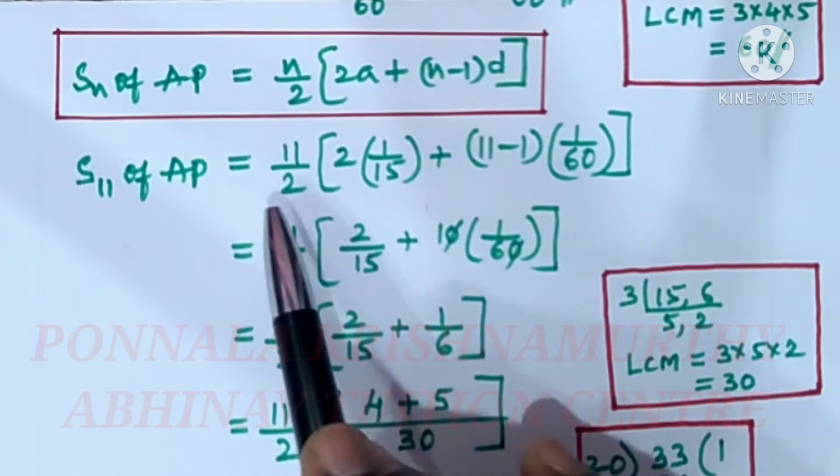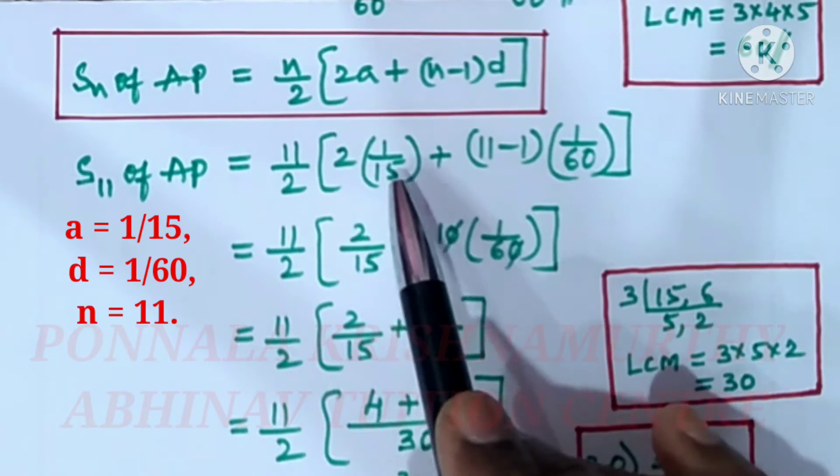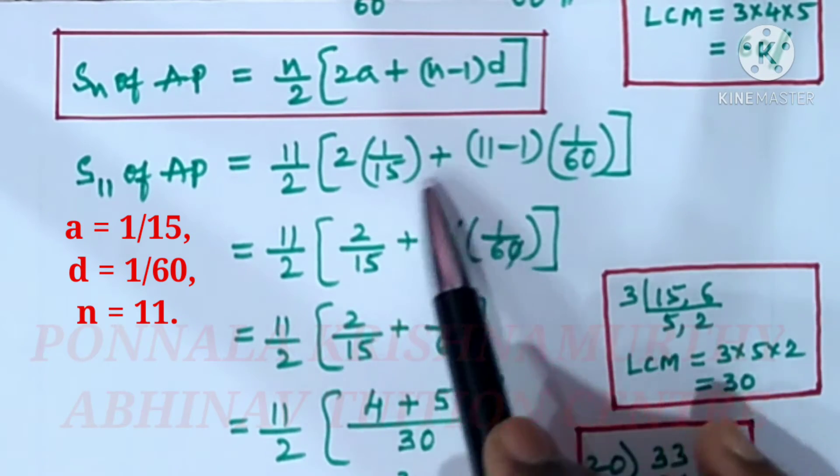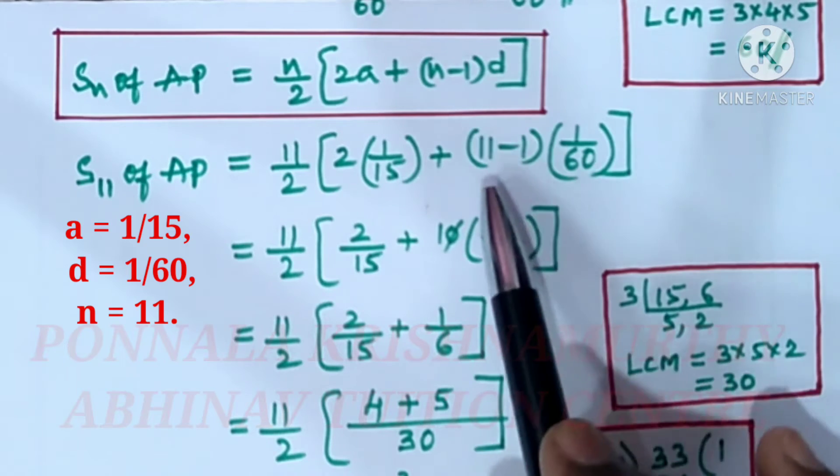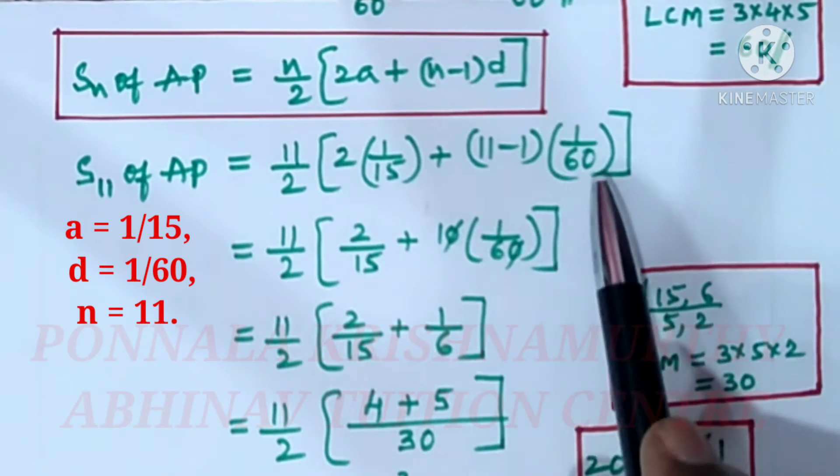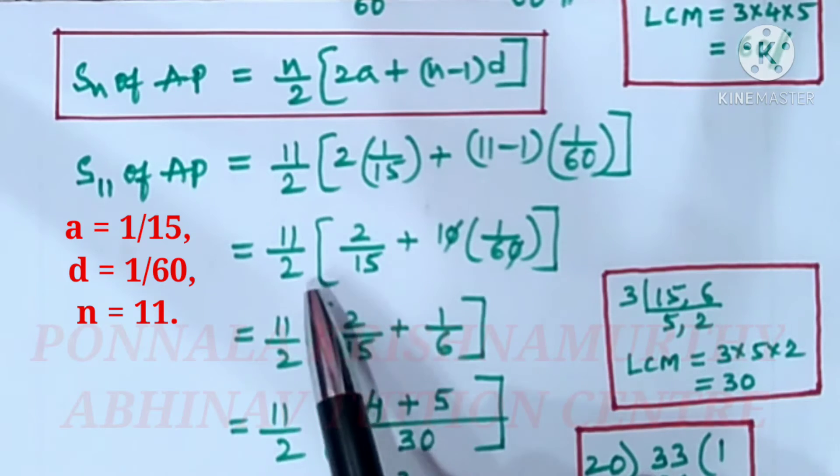S_11 of AP equals 11/2 times [2 times 1/15 plus (11-1) times 1/60]. That equals 11/2 times [2/15 plus 10 times 1/60].